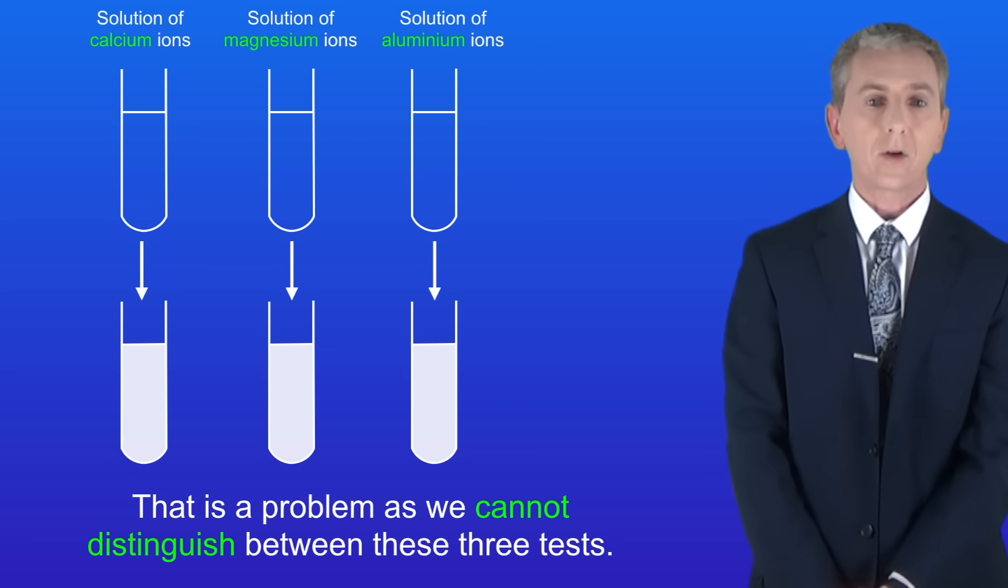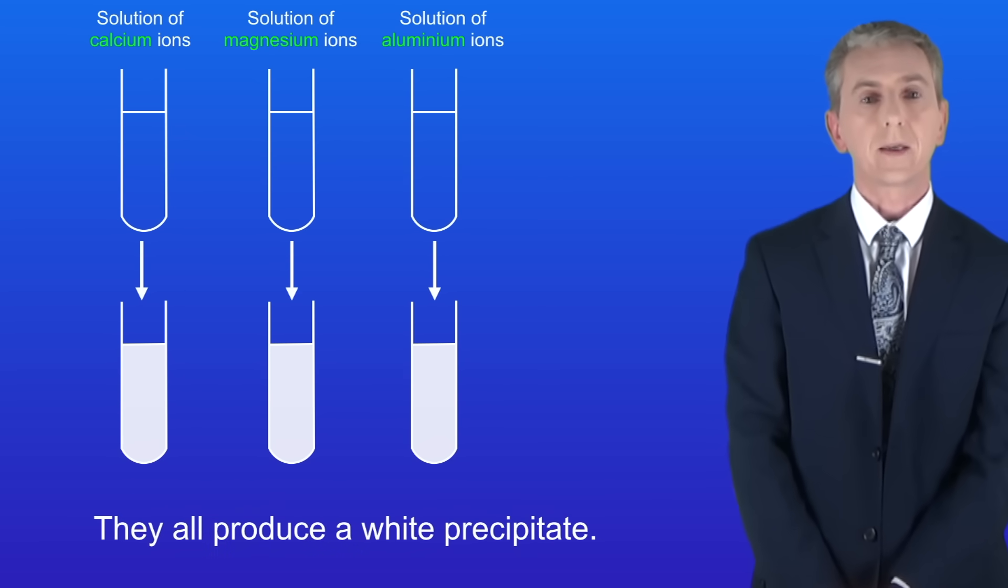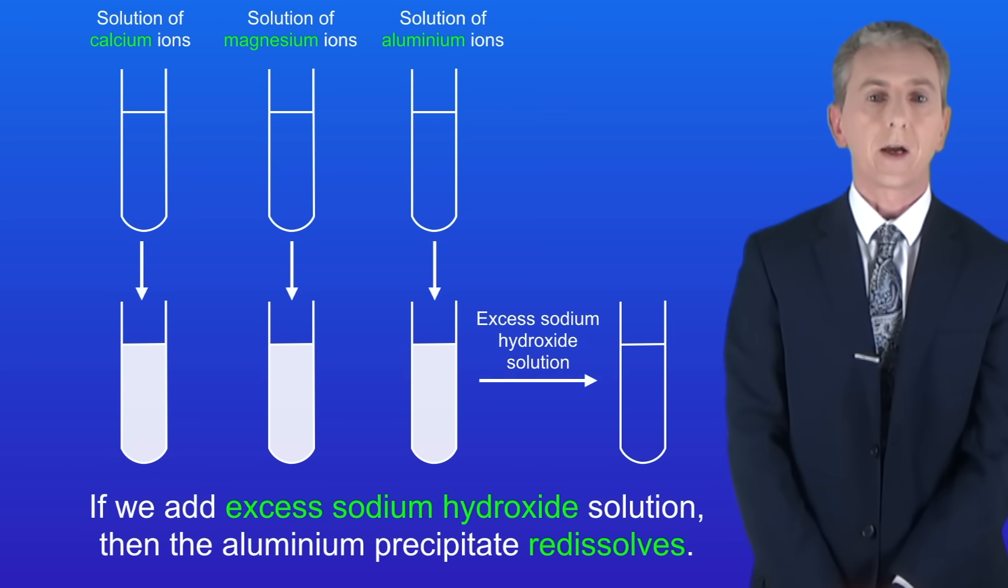Now that's a problem as we cannot distinguish between these three tests, they all produce a white precipitate. However, if we add excess sodium hydroxide solution then the aluminum precipitate redissolves. So that allows us to tell which of our three ions is aluminum.